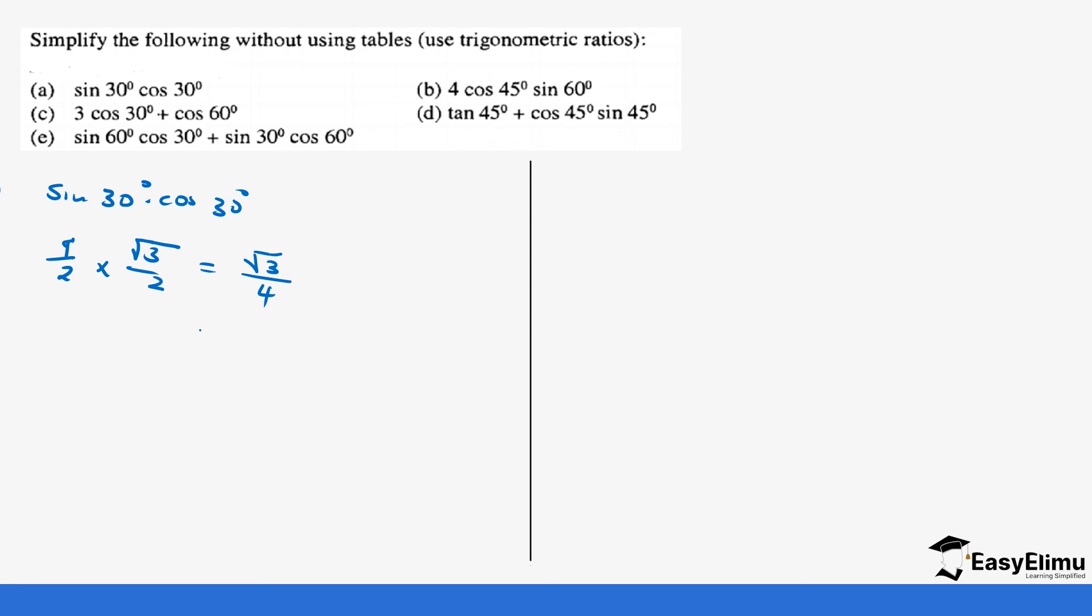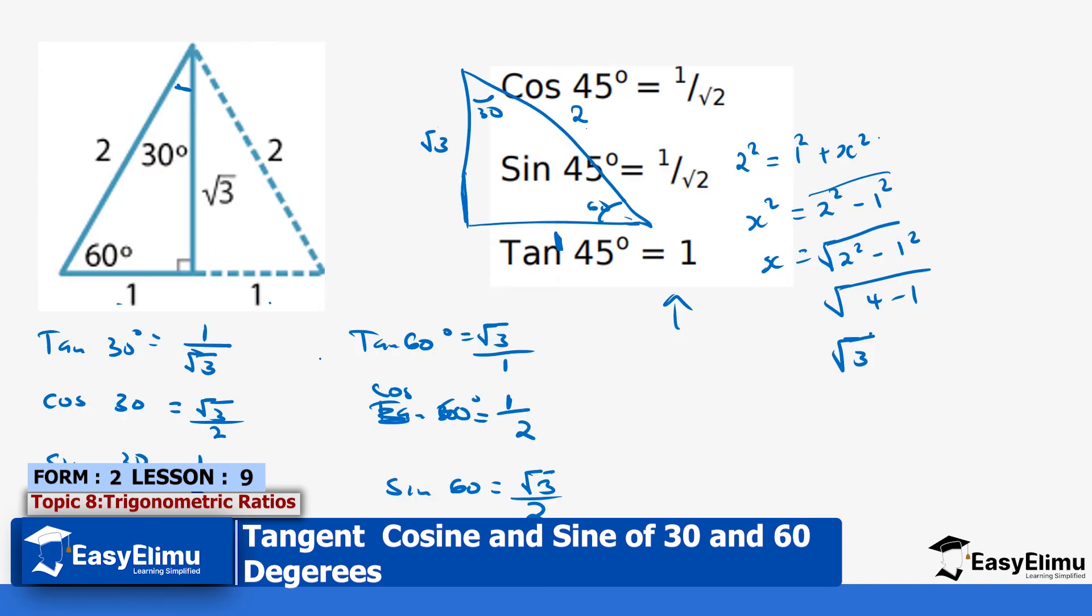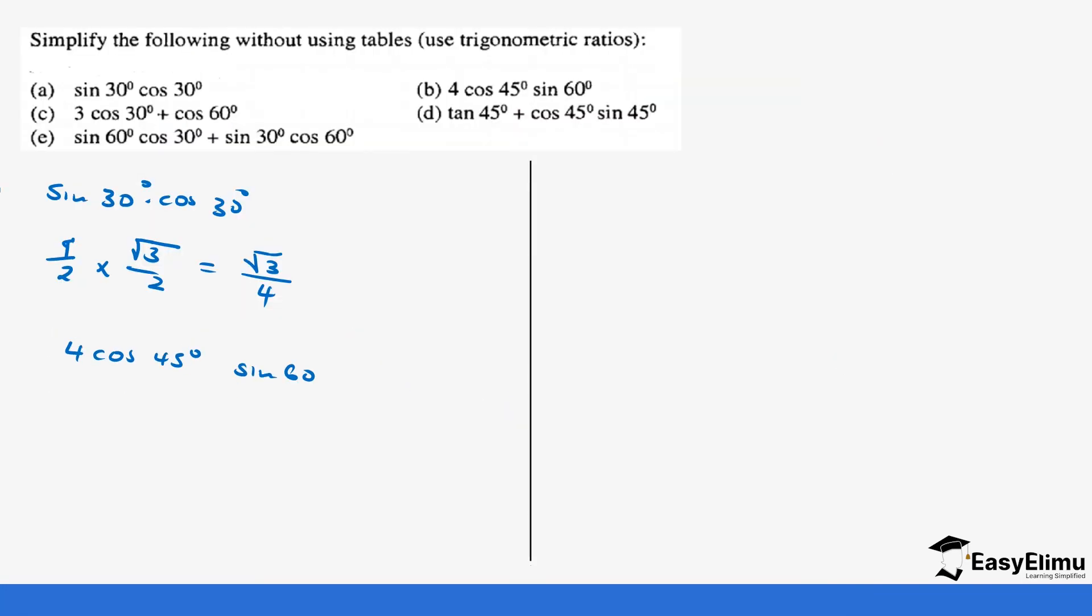And then b, we have 4 cos 45 degrees, sine 60. If you go back to the previous slide, remember cos 45 is 1 over root 2. So it's 4 times 1 over root 2 times sine 60, which is root 3 over 2. So it means it's 4 times 1 times root 3 over root 2 times 2, which gives us 4 root 3 over 2 root 2. So if you cancel this one, it gives us 2 root 3 over root 2.